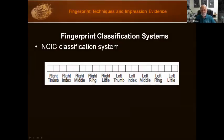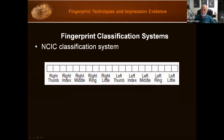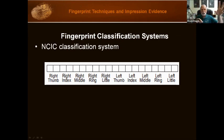We just covered the Henry system, and this will be a little bit quicker and easier. Once we have everything blocked out, we can put in the classification for NCIC. It's pretty simple. The reason we have the NCIC classification system is that at one point we had to figure out how to put the Henry formula into a computer, and having that numerator, denominator, dashes, small letters, and so on — there wasn't a really good way to put that in a computer, so they came up with the NCIC classification.